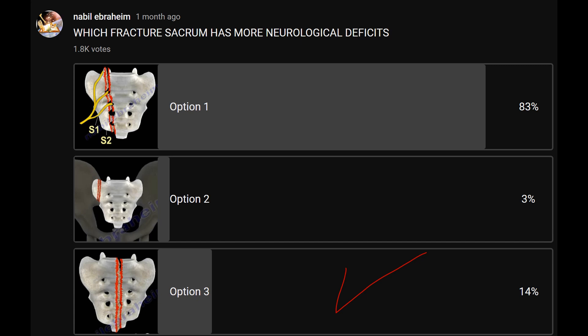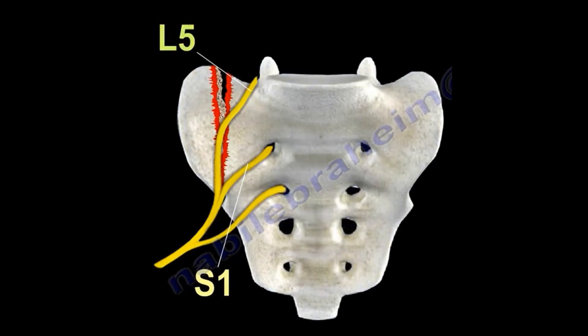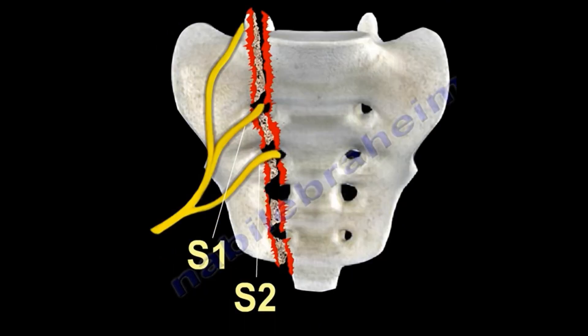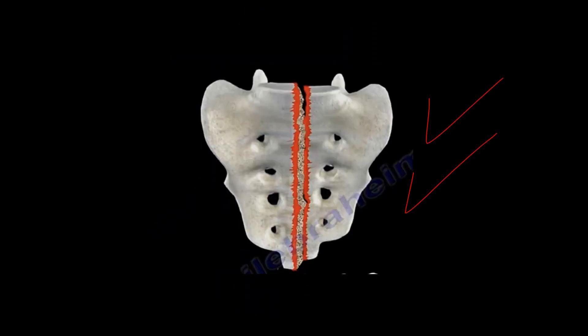Sacral fractures can give significant neurological deficit. The type with the most deficit is the one going through the sacral canal. If the fracture goes through the ala, you get L5 nerve root involvement in about 5% of cases. If it goes through the sacral canal, sacral nerve root involvement occurs in 20–30% of cases, and the patient may develop cauda equina syndrome with multiple nerve root involvement and bladder and bowel dysfunction.